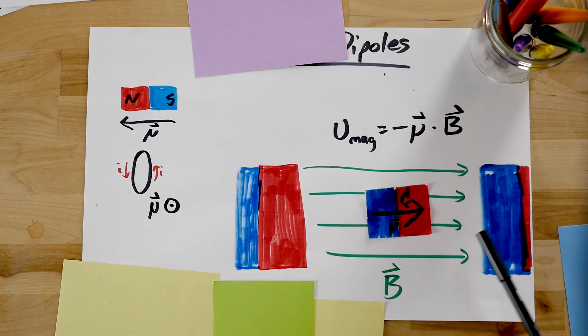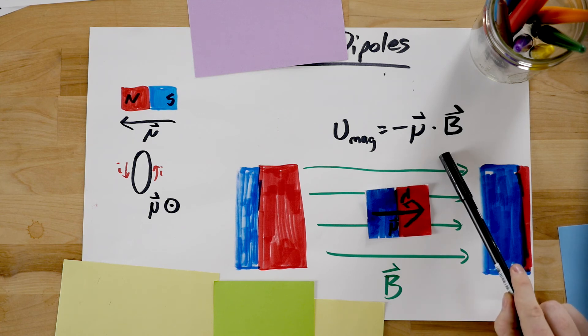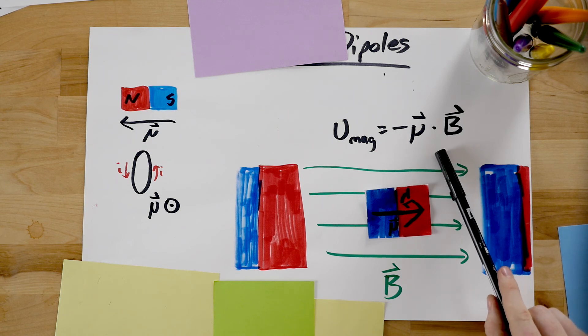So when the two vectors point in the same direction, this will make the most negative term, which is the lowest possible energy.